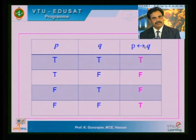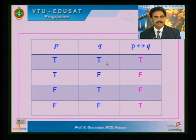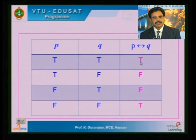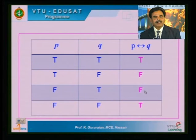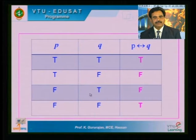The biconditional operator — whenever P and Q assume the same truth value, P biconditional Q is true. So when both P and Q are true, P↔Q is true; when both are false, P↔Q is also true. For the remaining two choices — where P and Q differ — P biconditional Q is false.